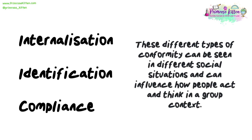So, to recap, the three types of conformity that you need to know are internalisation, identification and compliance. These different types of conformity can be seen in different social situations and can influence how people act and think in a group context.